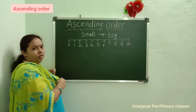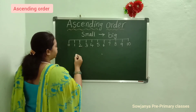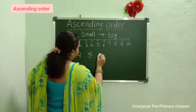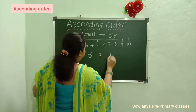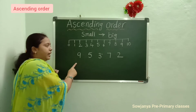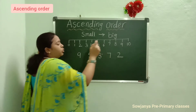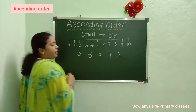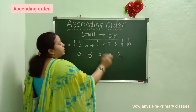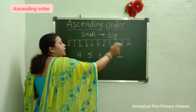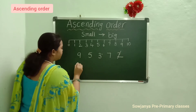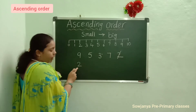Now we will do one problem. I will give a problem to you: 9, 5, 3, 7, 2. Now observe which is the small number in these 5 numbers. From these numbers, which is the small number? Yes, 2 is the small number. We have to cross the 2 and write the 2 first here.